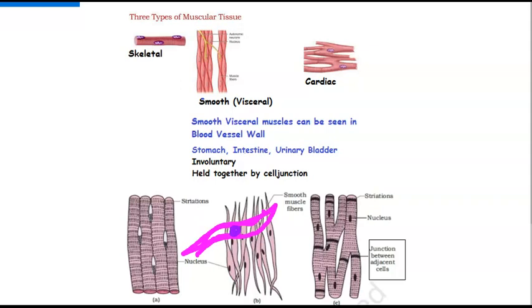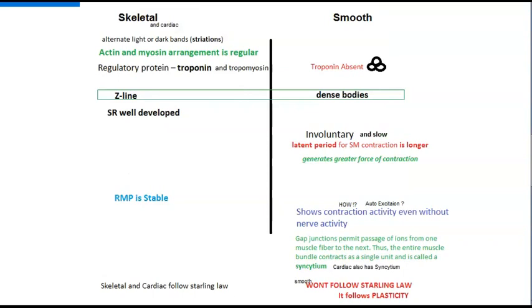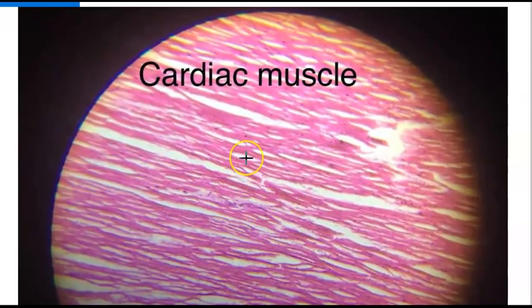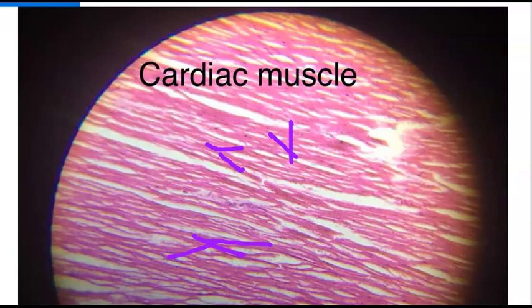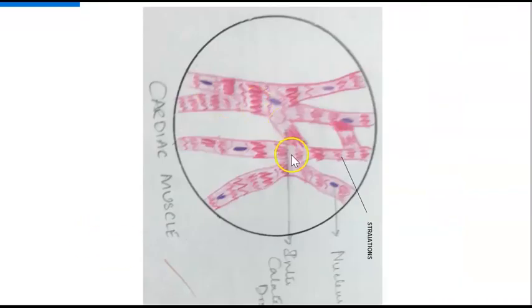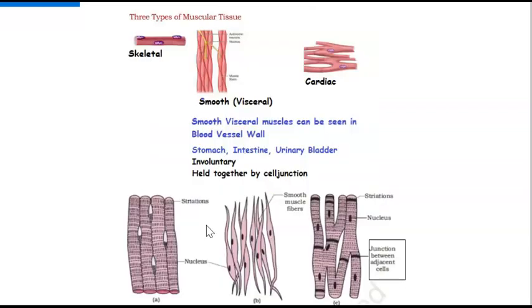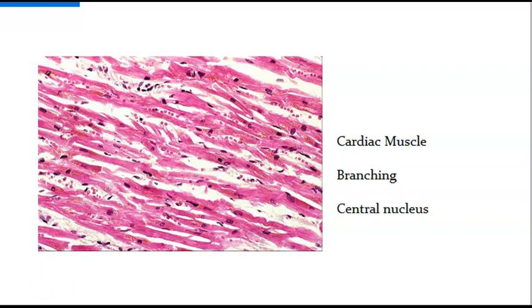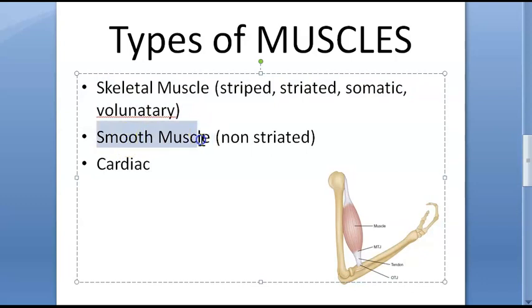Cardiac muscle, as seen in lab drawings, shows branching at every fiber — one branch becoming two — which helps identify it. Cardiac muscle has striations, intercalated discs (junctions), branching fibers, and a central nucleus. Faint light and dark bands are present. To summarize the three types: skeletal, smooth, and cardiac.